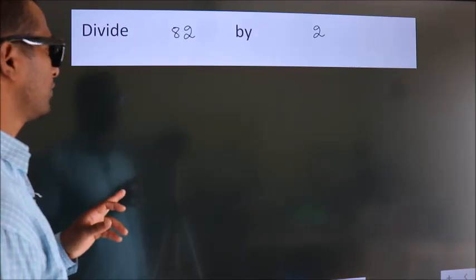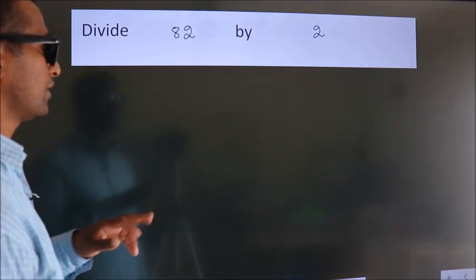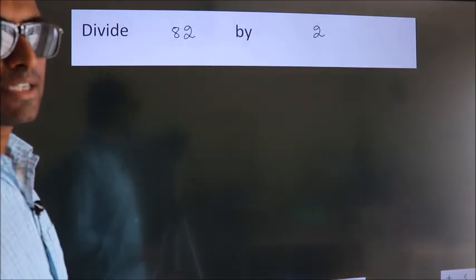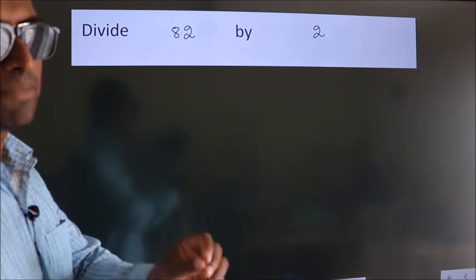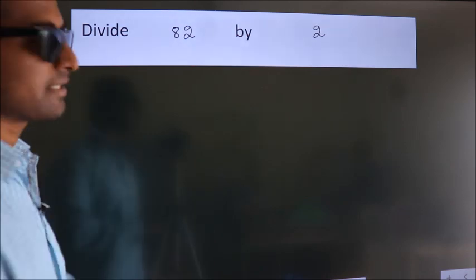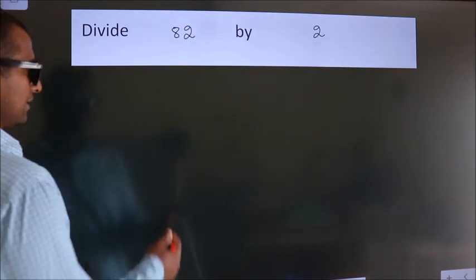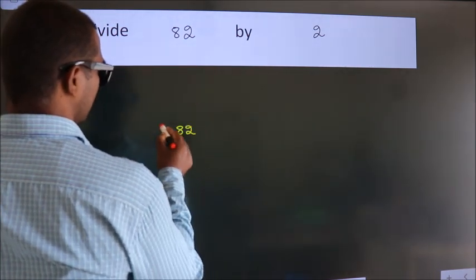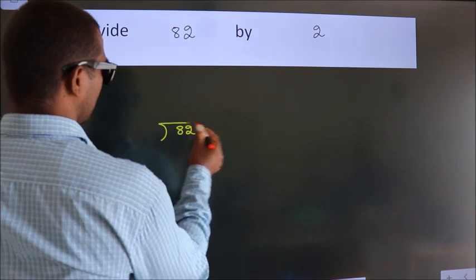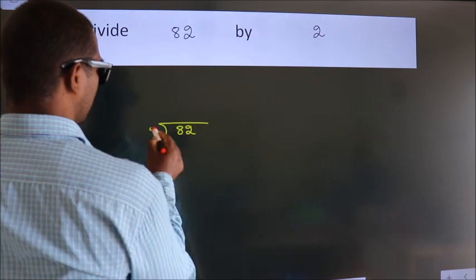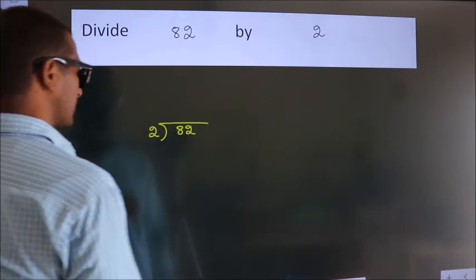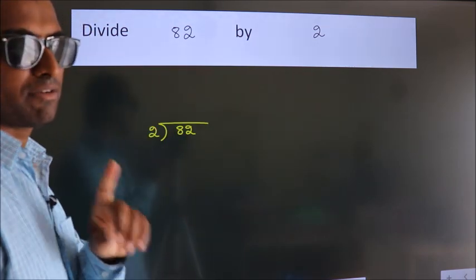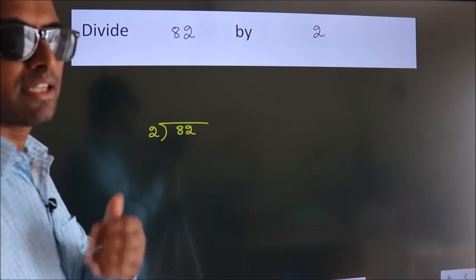Divide 82 by 2. To do this division, we should frame it in this way: 82 here, 2 here. This is your step 1.